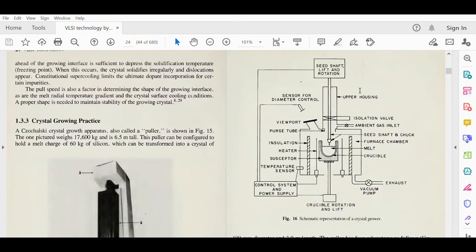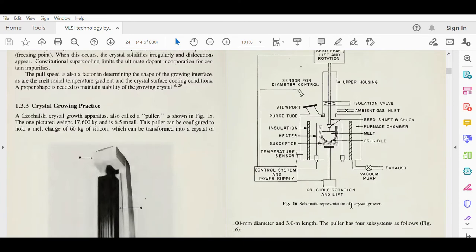sensor for diameter control, upper housing, seed shaft lift and rotation, ambient gas inlet, seed shaft and chuck, furnace chamber, melt crucible, exhaust and vacuum pump, and crucible rotation and lift. This is how the whole structure is placed.